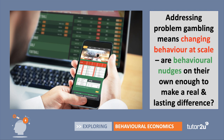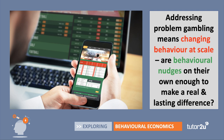As with the session on obesity, if we're going to address the issue of problem gambling using behavioural nudges, it means trying to change behaviour at scale — the behaviour, conceivably, of hundreds of thousands, perhaps millions of people. There's a genuine debate in economics and policymaking about whether behavioural nudges on their own are enough to make a real, persistent, and lasting difference. Press that pause button if you're doing this at home and try to think of three nudges that might help address problem and at-risk gambling — prompting people to gamble less and reduce the risk of financial and mental ill health.